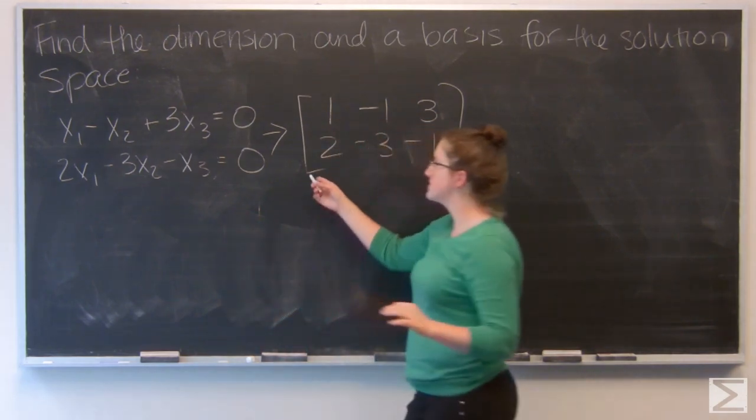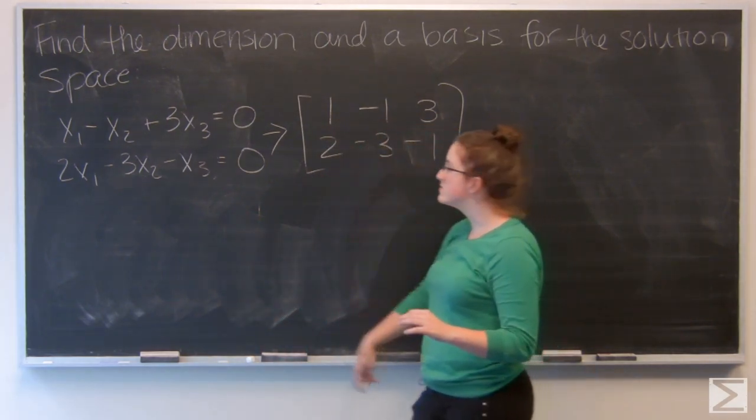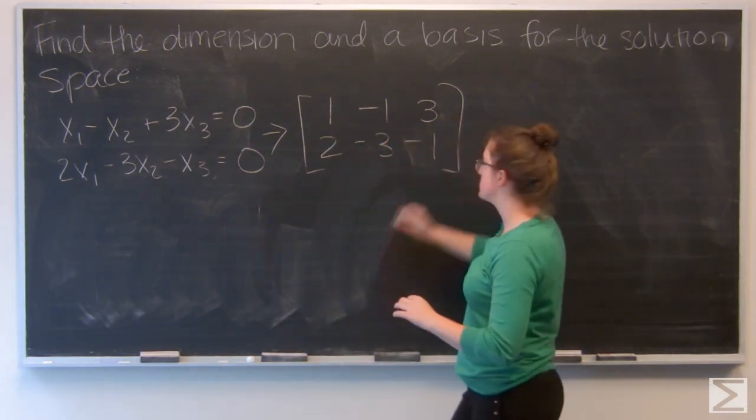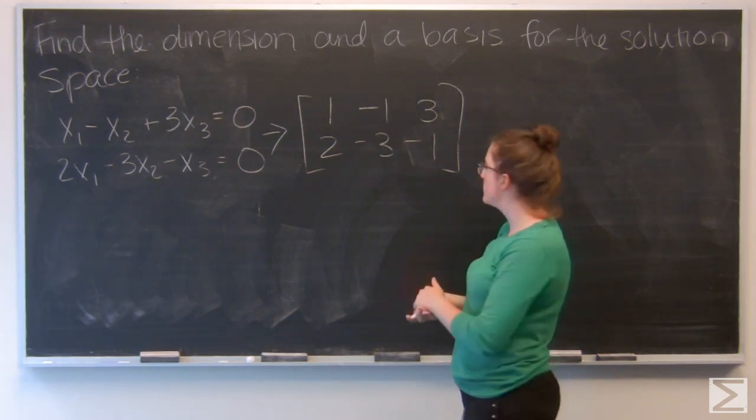I have a column for x1, x2, and x3. Since both equations are set equal to zero, I'm going to leave off the two zeros that you would see on the side.